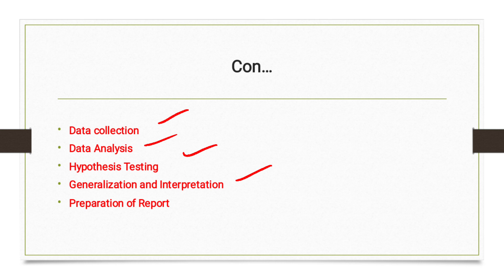The ninth step is generalization and interpretation. With an acceptable hypothesis, the researcher can arrive at generalization or develop a theory. Some types of research have no hypothesis, in which case the researcher depends upon interpretation. This step can also include future recommendations in preparation of a report.